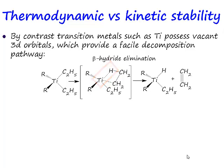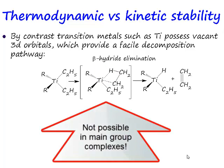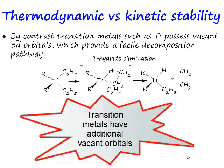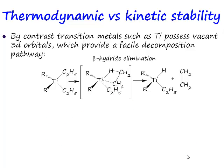This is possible in transition metal centres and not possible in main group complexes. The reason is because transition metal complexes have additional vacant orbitals. There's an orbital that's not being used in tetraethyl titanium, and that orbital can coordinate this beta hydride.